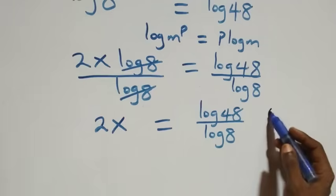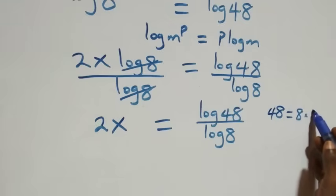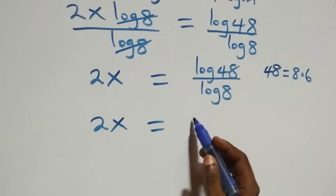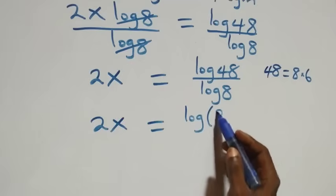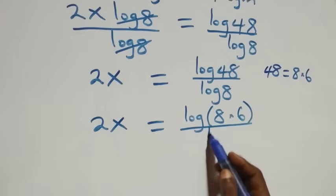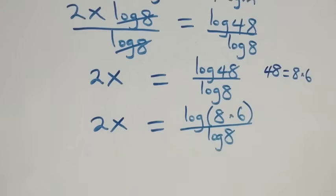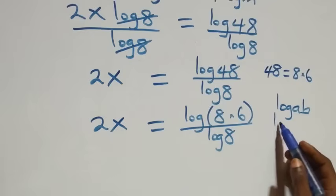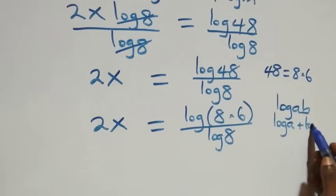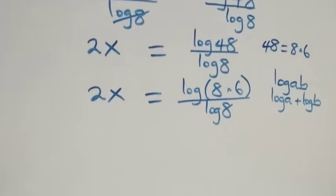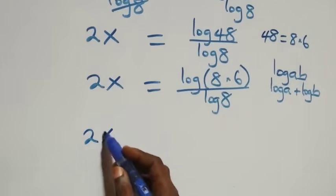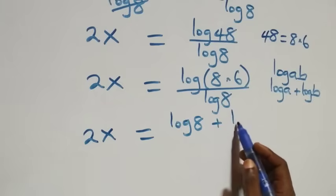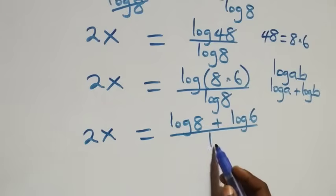From here, 48 can be expressed as 8 times 6. So what we have becomes 2x equals log(8 × 6) over log 8. Applying the product rule of logarithms — log(a·b) = log a + log b — this becomes 2x equals (log 8 + log 6) all over log 8.